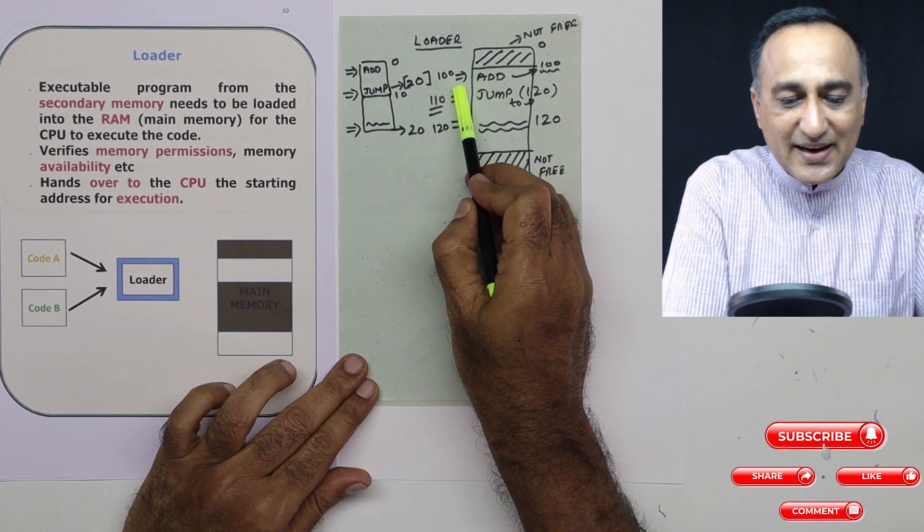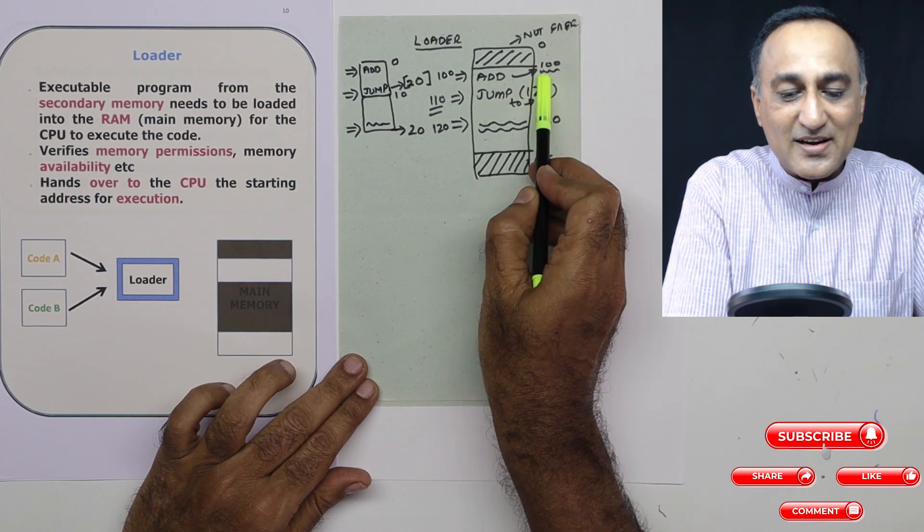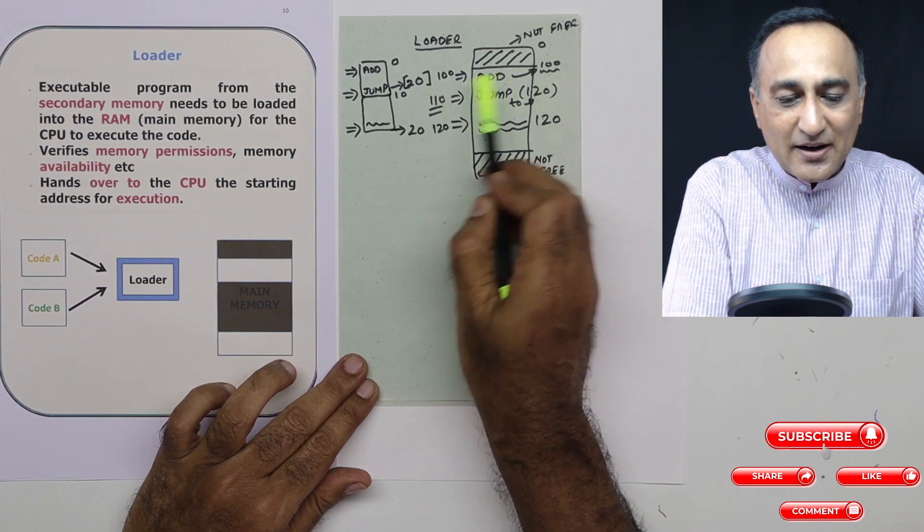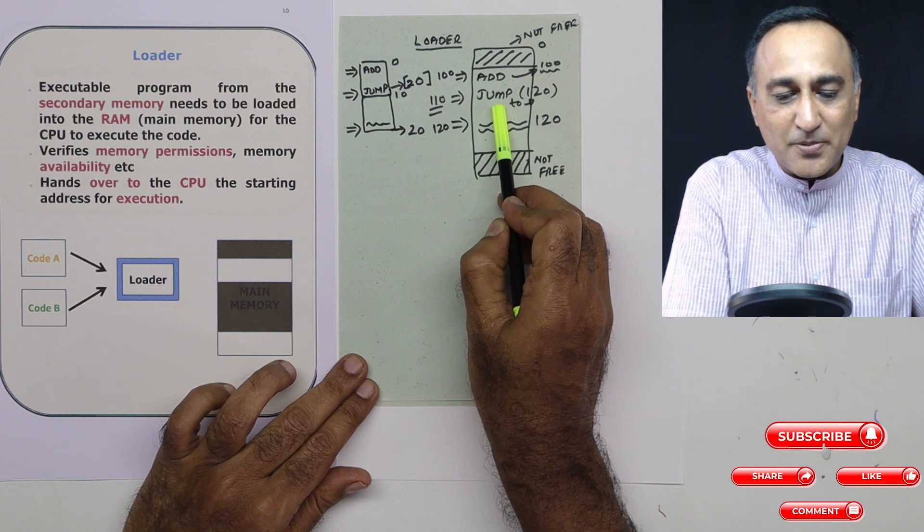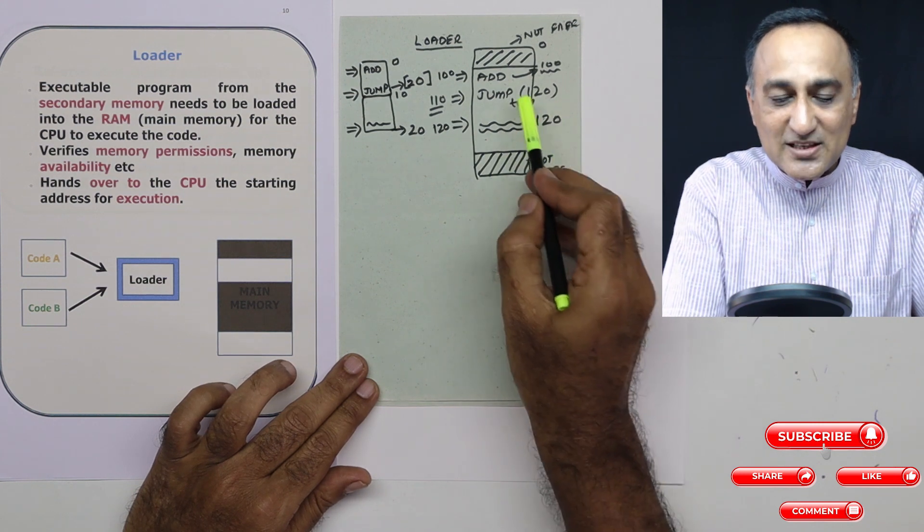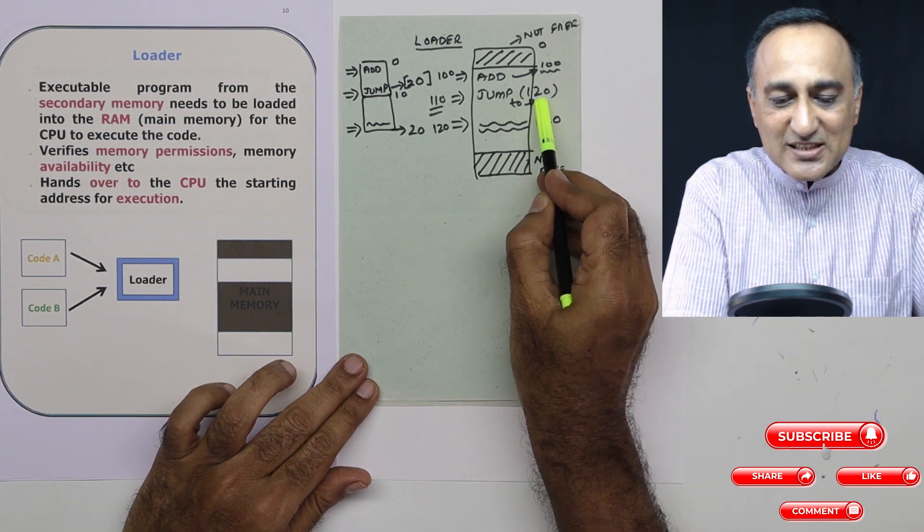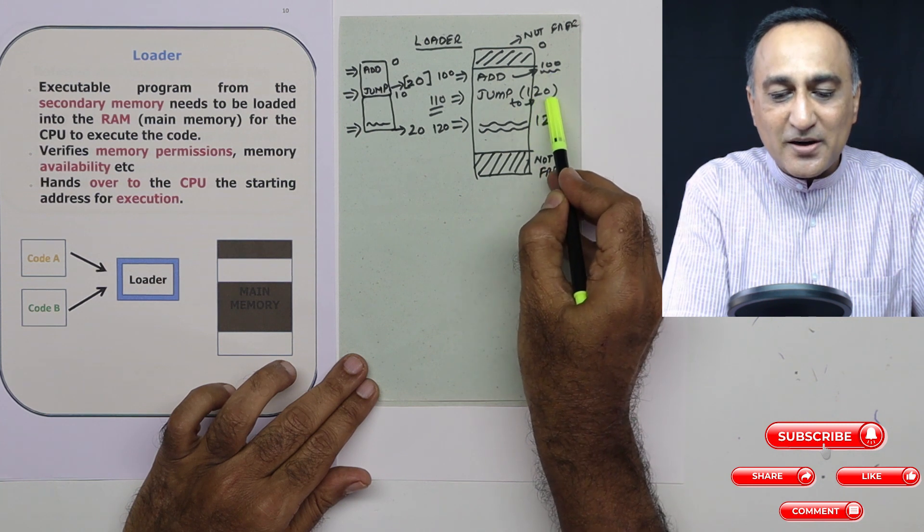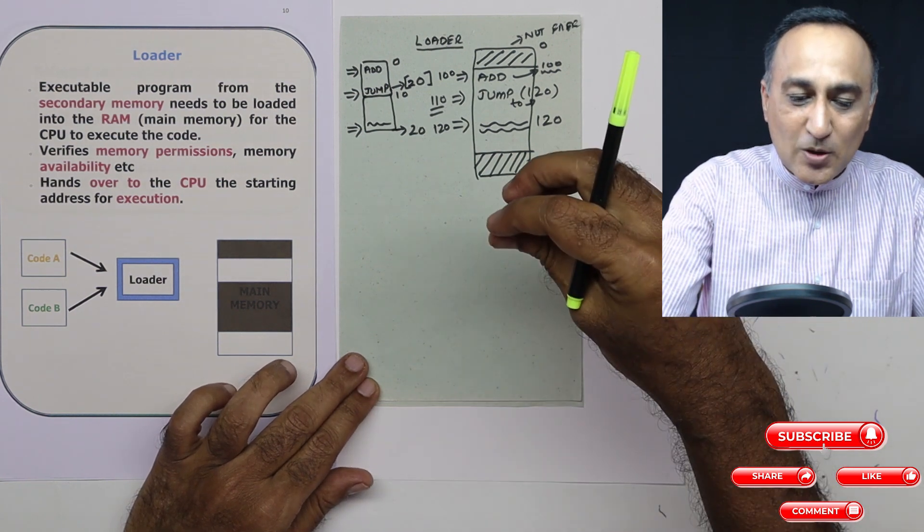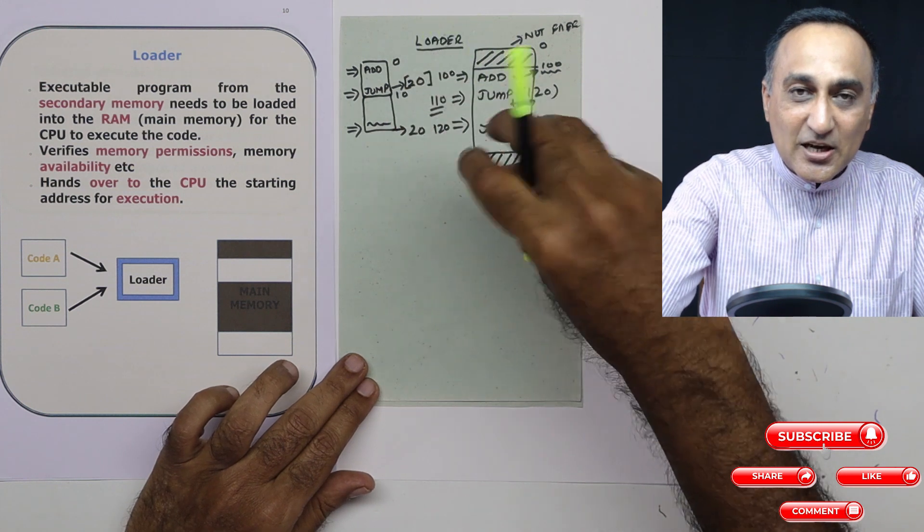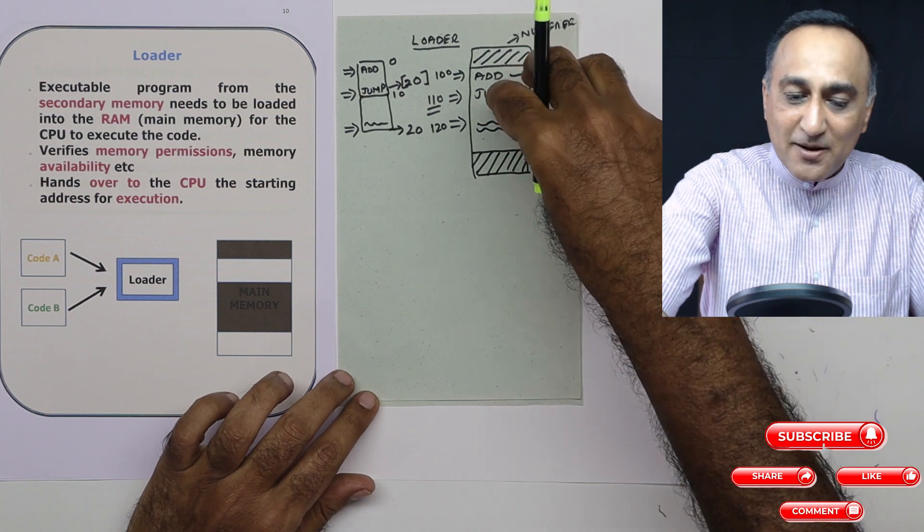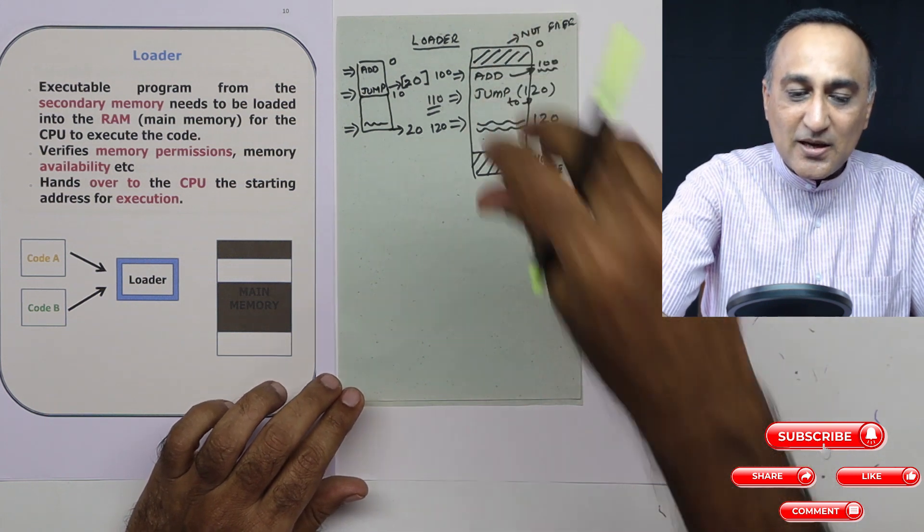Say the location from 100 is available. Now it puts add at the 100 location, it puts jump at 100 plus 10. So at 110 location, it puts jump. And at 120 location, it puts whatever is that instruction here. And also what it does is this jump 20 is now added with 100, so now it becomes jump 120. So it comes here and begins to execute this particular instruction. So this is the job of the loader, it adjusts the various positions in the main memory based on the information of the secondary drive and based on the availability of storage space in the main memory.